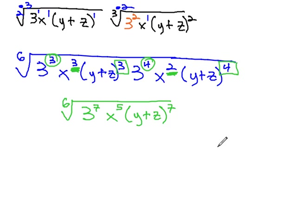We're not quite done, though, because we'll notice that some of these exponents are larger than the index. This means we can divide out some of these factors by dividing the exponent by the index to see what comes out of the sixth root and what remains inside of the sixth root. 7 divided by 6 is 1 remainder 1.